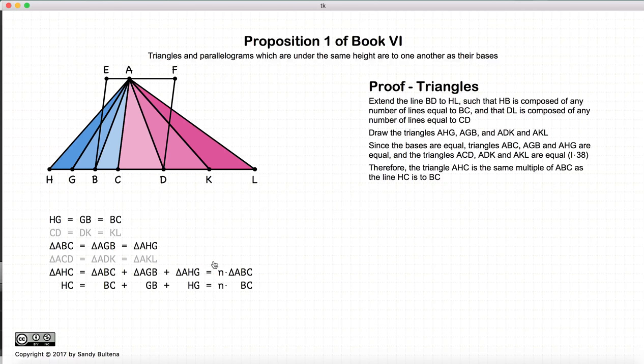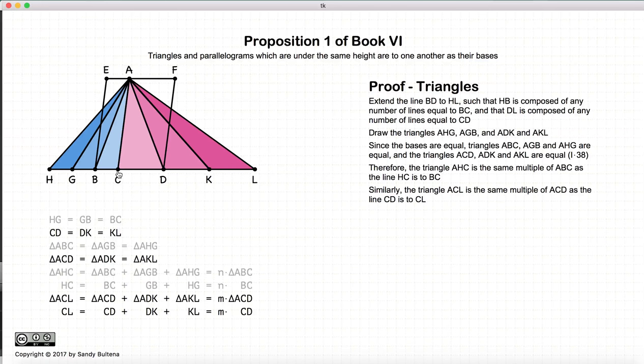Or in other words, AHC is equal to some number times the area of ABC. And the base HC is the same multiple times the length of BC. And I can do the same thing for all the pink triangles. So ACL will be some multiple of ACD and CL will be the same multiple of CD.